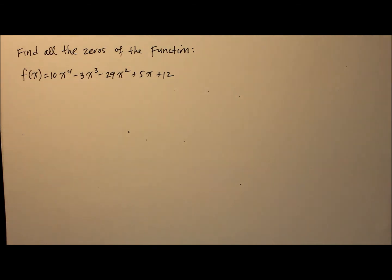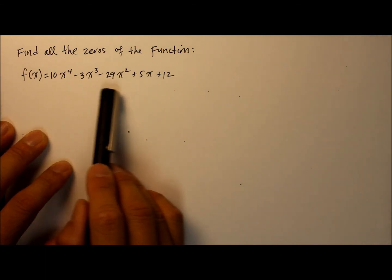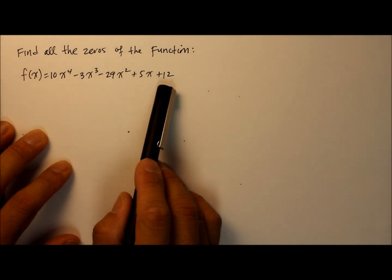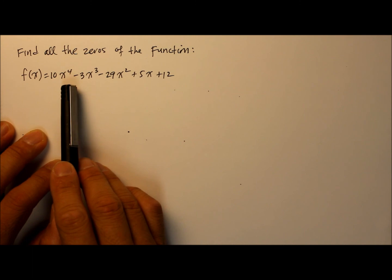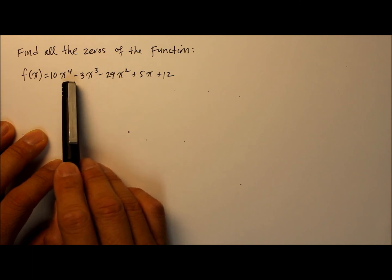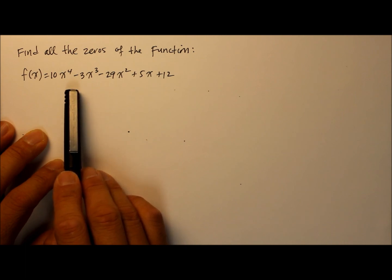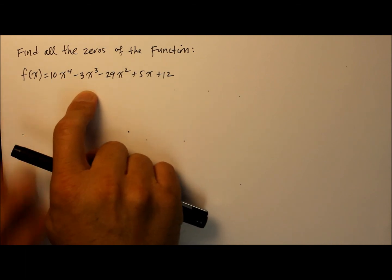Hi, this instructional video is a continuation of finding or solving all the zeros of a function. That means in this case we have a polynomial, and if you were to graph it, somewhere on the x-axis it's going to intersect at four points. The degree of the exponent of a polynomial indicates the number of times the line will cross the x-axis.